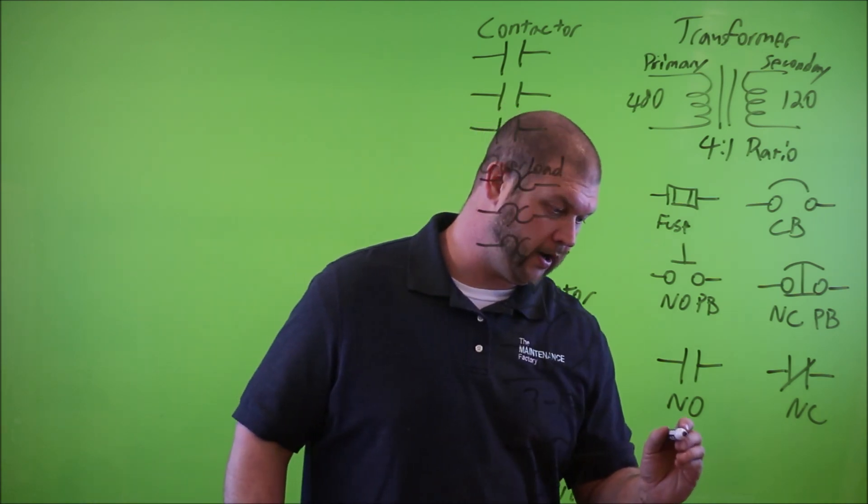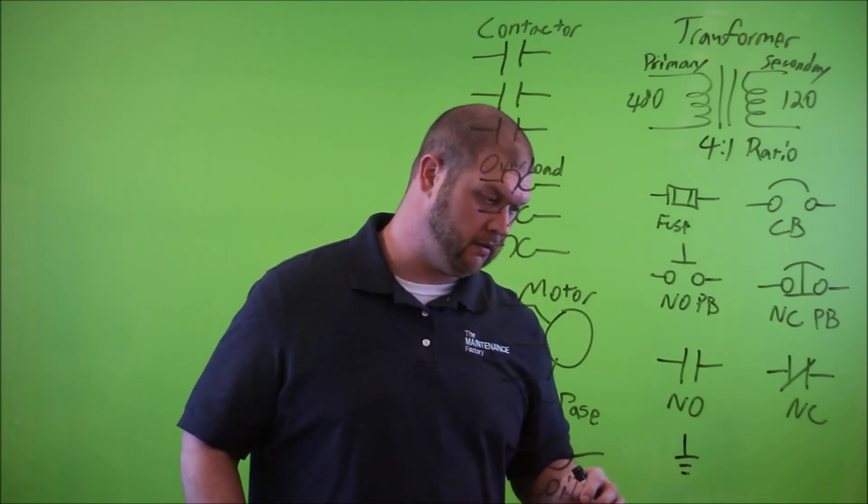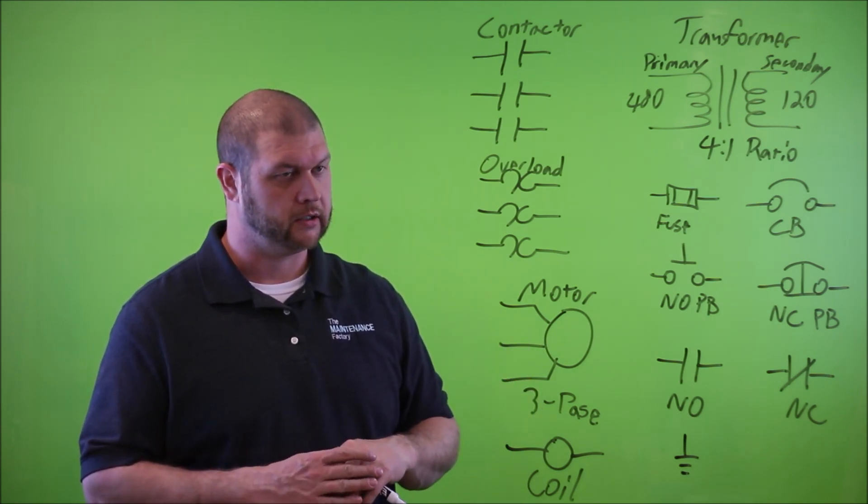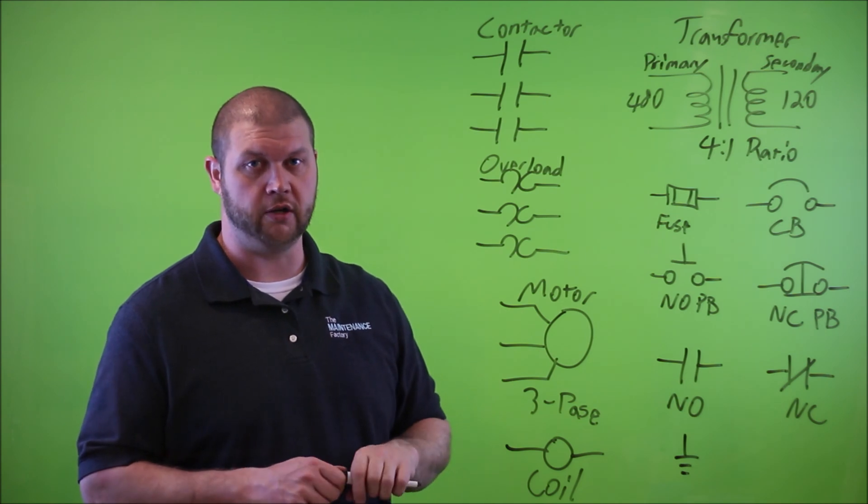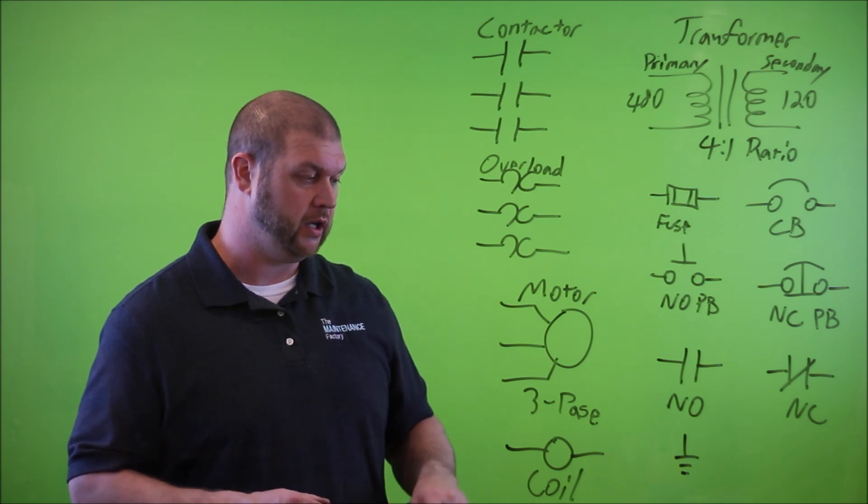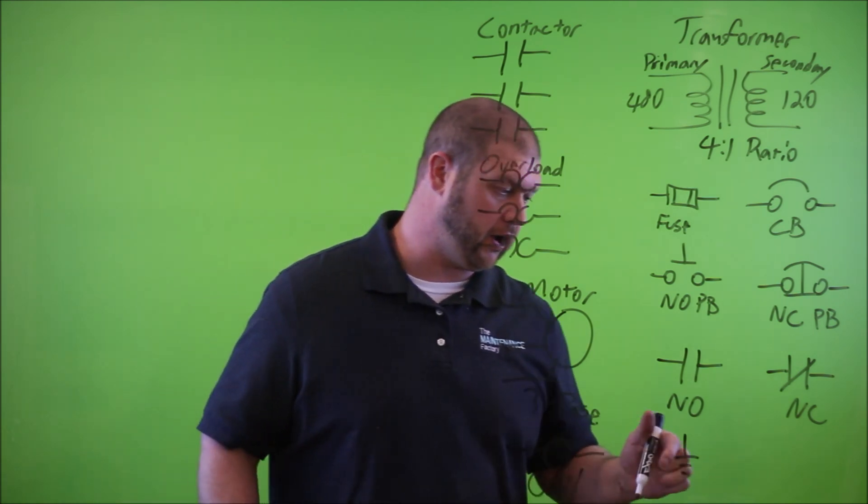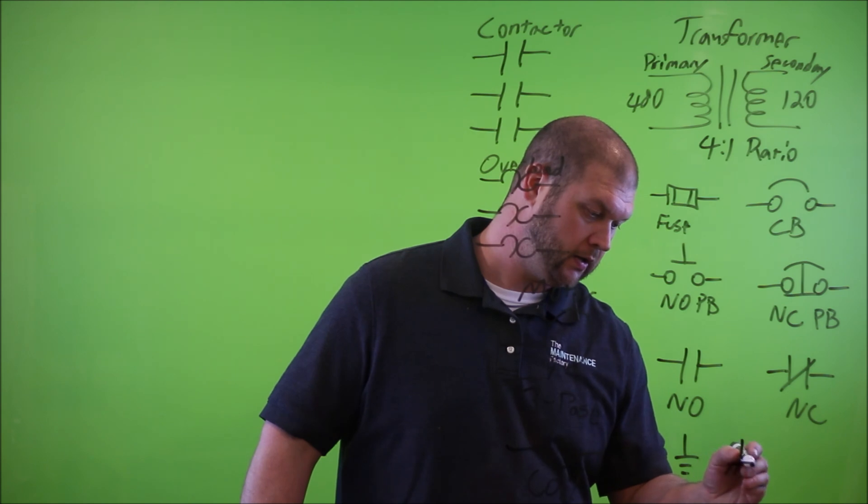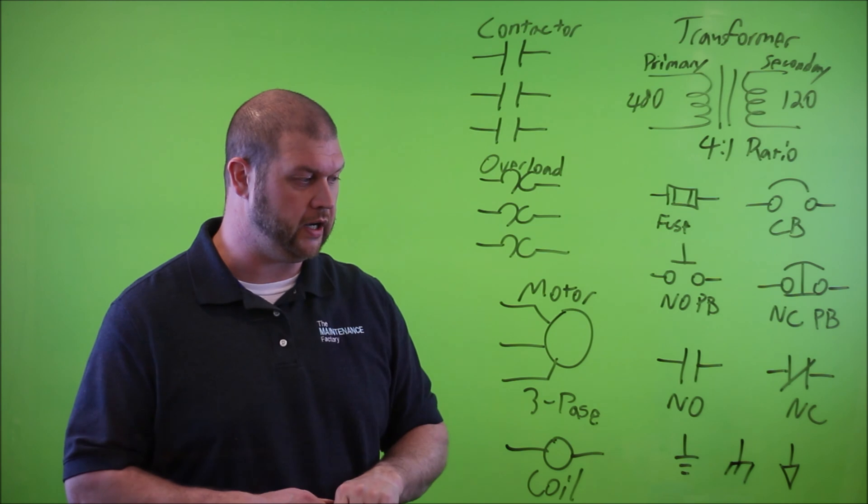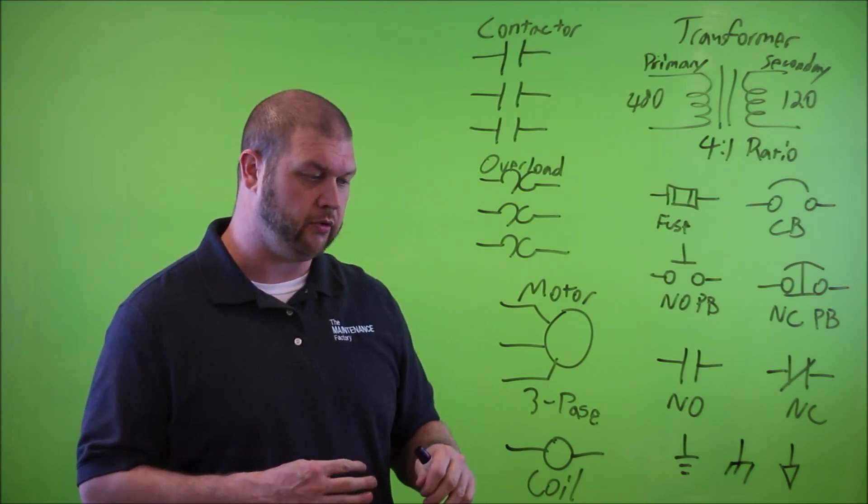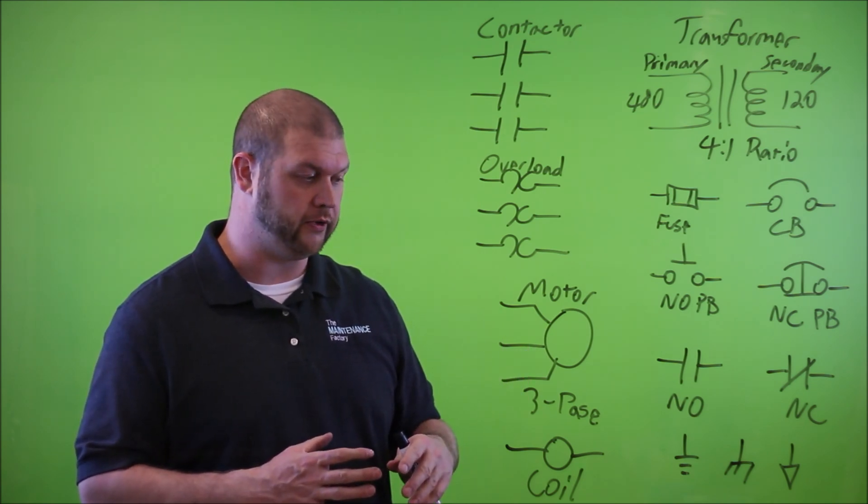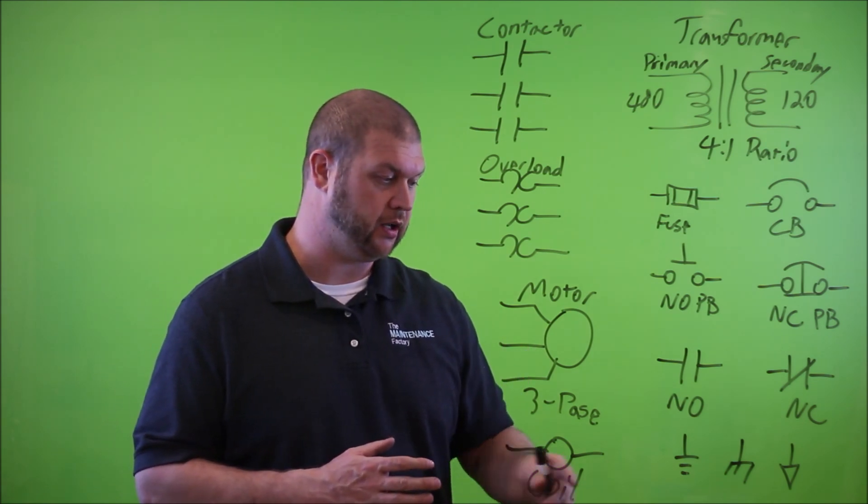I think there's only one more really important symbol that we're missing, and that is the ground symbol. The ground symbol looks like this. There's really three basic ground symbols. This is probably the most common one in use, especially in the world of industrial maintenance and automation and controls. There's also another ground symbol that looks like this, and then one more that looks like this.